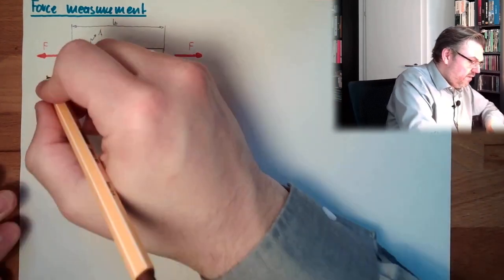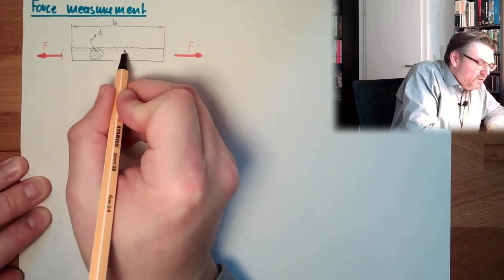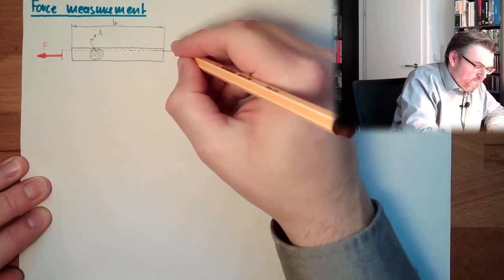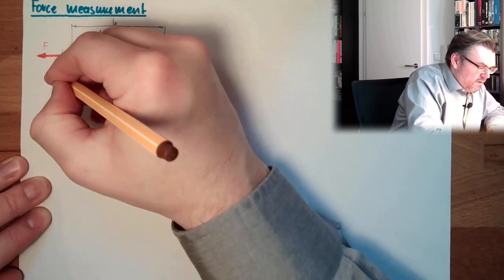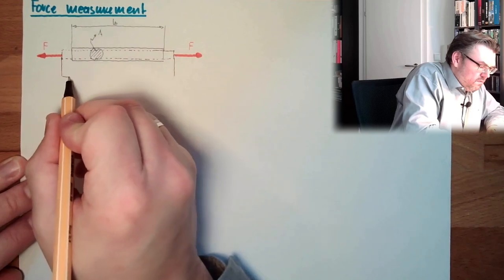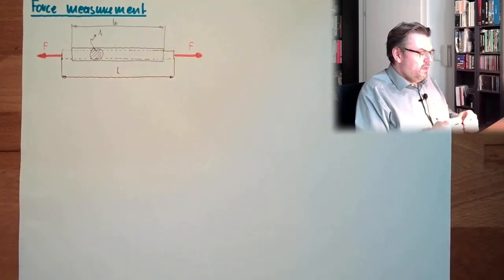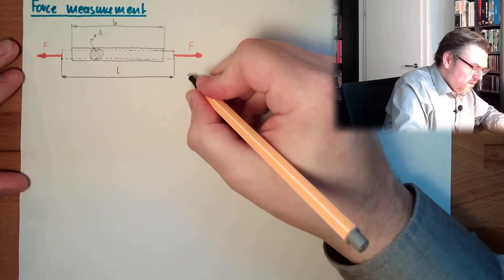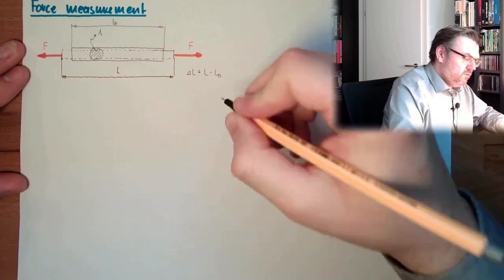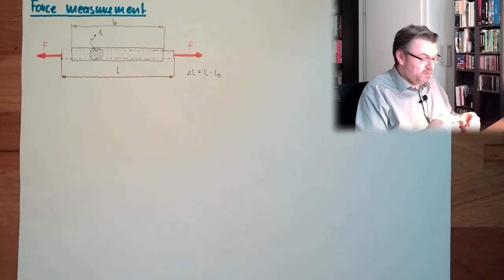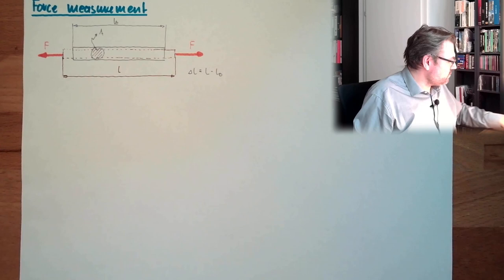And here we have a changed piece of material. This has changed now the length to the length L. So there is a certain delta L, which is actually L minus L0. So it was growing, getting longer. This is our findings, our observation on all materials.